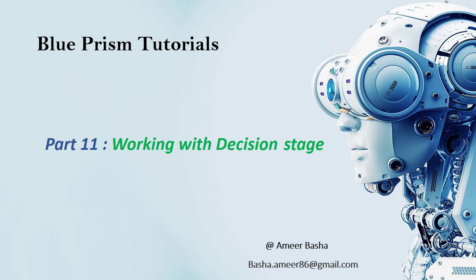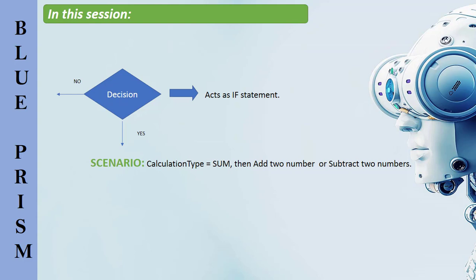Welcome to Blue Prism tutorials. My name is Amir. This is Part 11, working with the decision stage. The decision stage acts as an if statement — if the result is true it takes one direction, if the result is false it takes another direction. The decision stage is the simplest method to create multiple paths in a process.